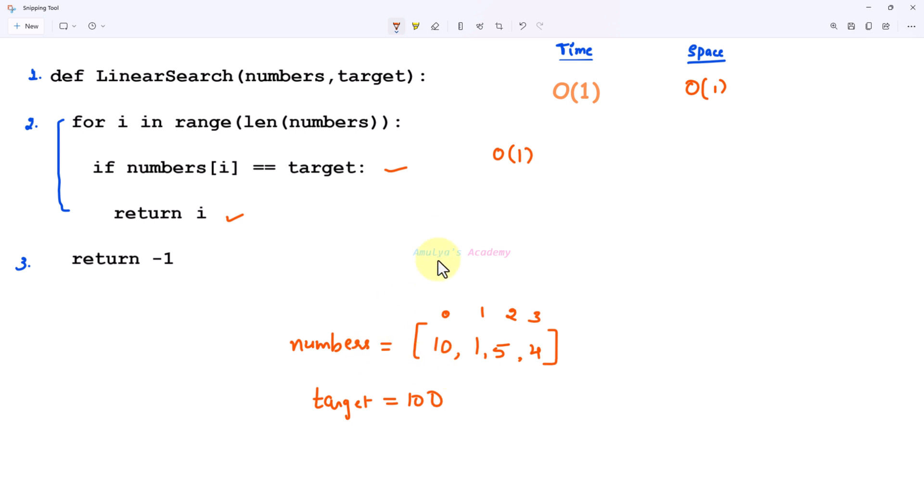So when target is not found it executes 4 times, here 4 is nothing but length of numbers. If I take that as the n then it will execute big O of n times. Here this is the best case scenario and this is the worst case scenario. So when we calculate the time complexity of an algorithm we will take worst case scenarios.